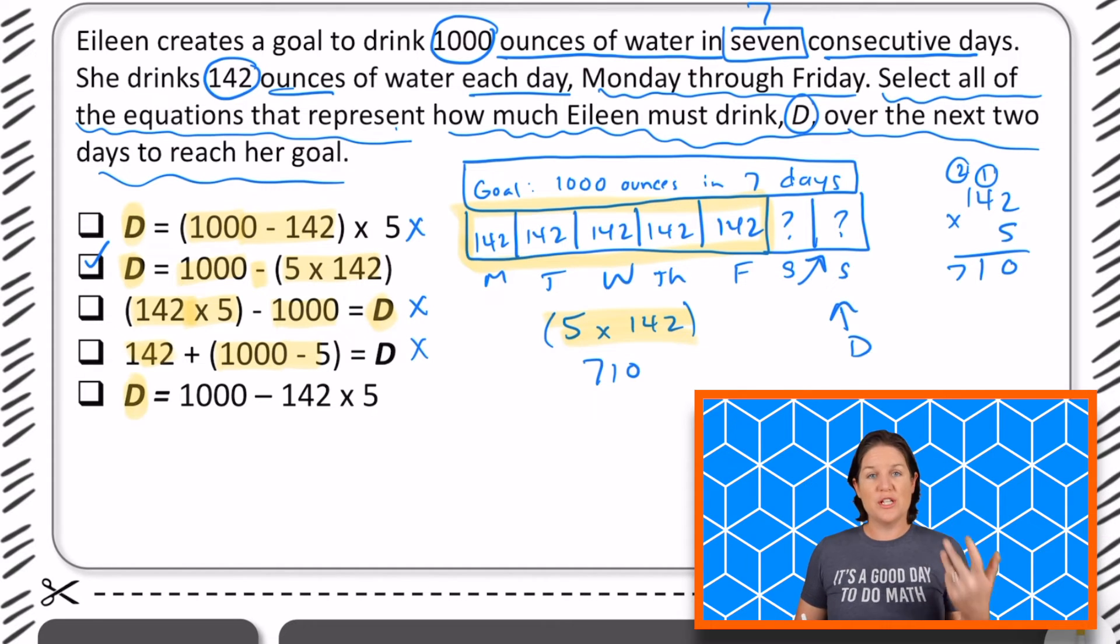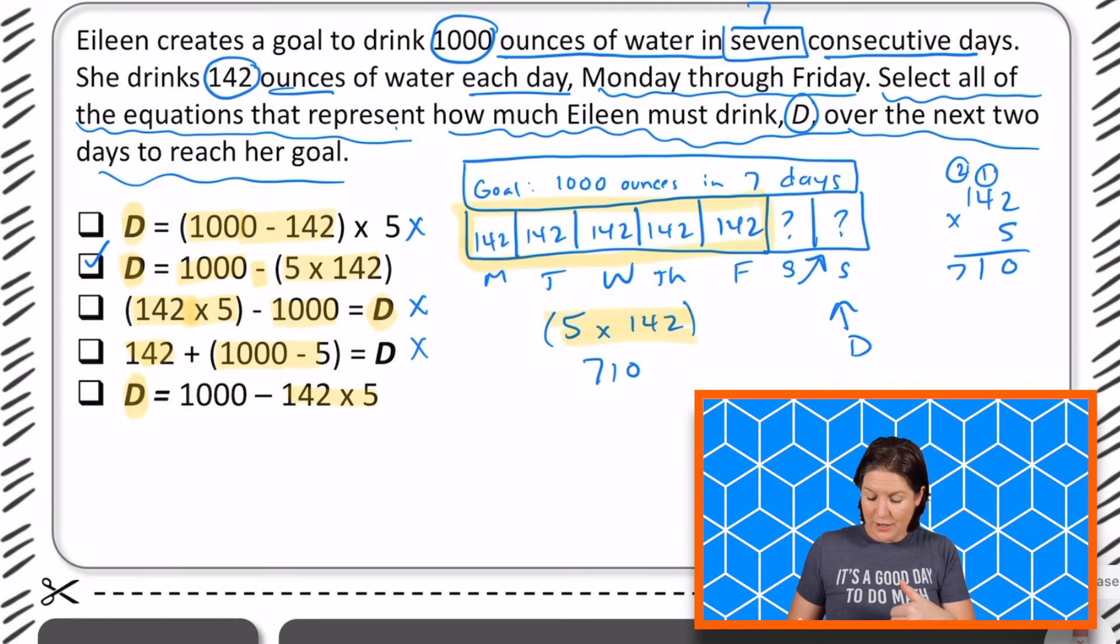And this one says to figure out how much she needs to drink. We have our goal of 1000 minus 142 times five. So there, we don't have any parentheses, right? But we do know the order of operations. So if we're looking at 1000 minus 142 times five, we've got subtraction there and we've got multiplication. If there are no parentheses, which operation should we do first? Subtraction or multiplication? Multiplication. So this one would work because first we could multiply 142 times five, and then subtract that from 1000 to get how much she still needs to drink.